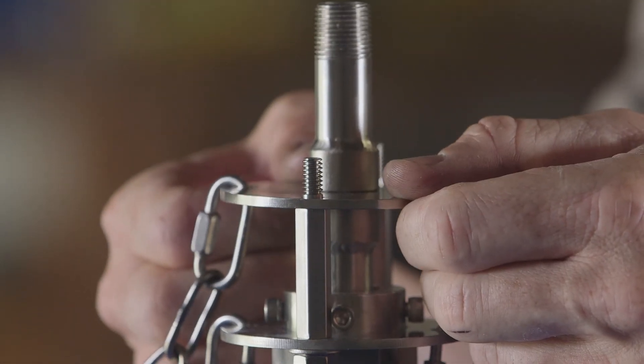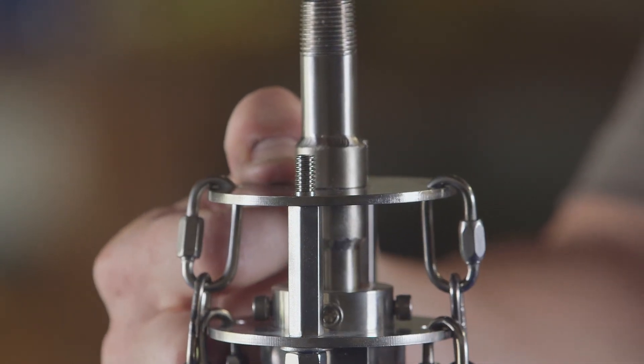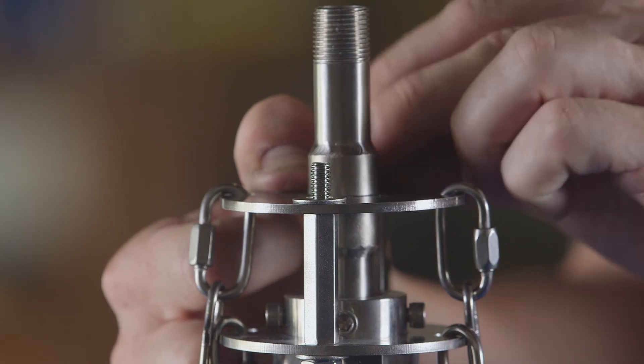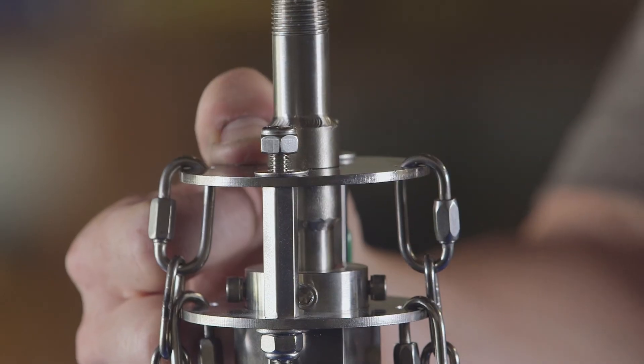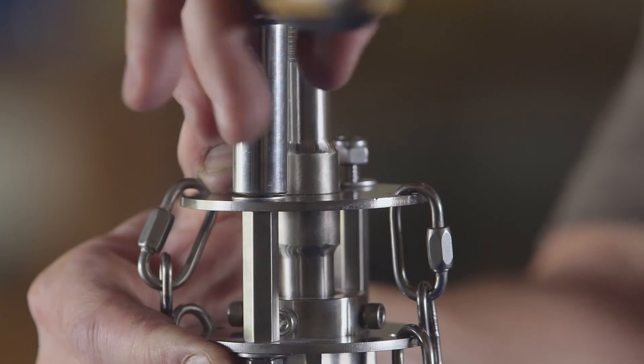Continue inserting the solution tube until the upper chain plate is seated on the restraint bolts. Lock the solution tube into the operating position by securing the upper chain plate to the restraint bolts with the nuts provided.